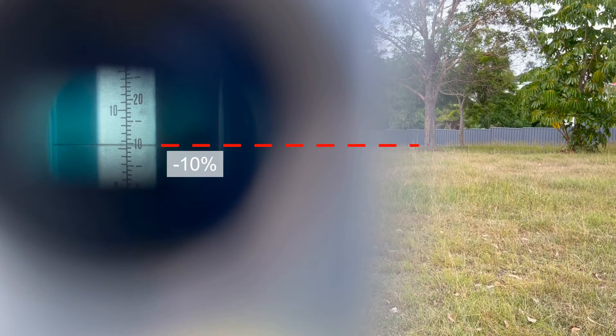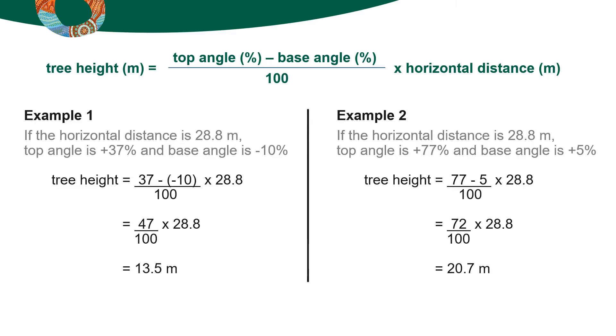Next, measure the slope to the bottom and top of the tree. Looking through the clinometer, take a reading in line with the base of the tree on the upside slope using the percent scale. Record this number, then take a reading in percent to the top of the tree. To calculate the tree height, use this equation. If the top angle is positive and the base angle is negative, add the two numbers. If the base and top angles are the same sign, subtract one from the other. Multiply by the horizontal distance to get the tree height. Always check whether the calculated height seems reasonable.